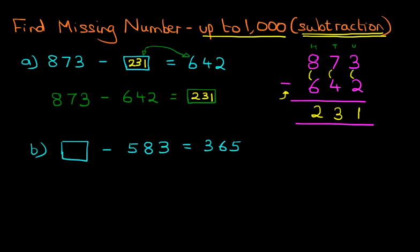Well, the first step is we want to get the missing number, that is, the box over here, on one side of the equal sign and the numbers on the other side. So what we're going to do is we're going to take the 583 and we're going to move it across to the other side. And don't forget, if it's a minus here, when we move it across, it becomes a plus. So to show this better, let's rewrite the question.